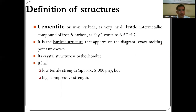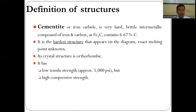Cementite, or iron carbide (Fe3C), is a very hard, brittle intermetallic compound of iron and carbon, containing 6.67% carbon. It is the hardest structure that appears on the diagram. Its exact melting point is unknown. Its crystal structure is orthorhombic. Properties: low tensile strength of approximately 5,000 psi, but very high compressive strength, and it is brittle in nature.